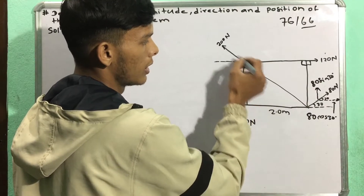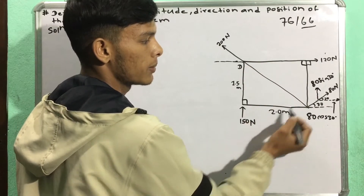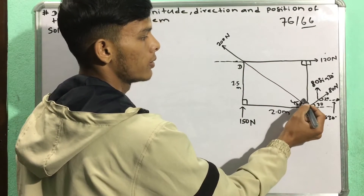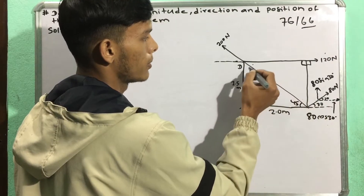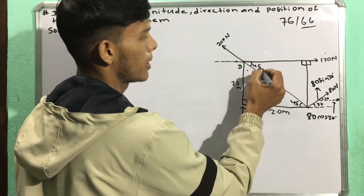And if we can cross this line, we will have 45 degrees, so we will have 45 degrees, and we will have 45 degrees.